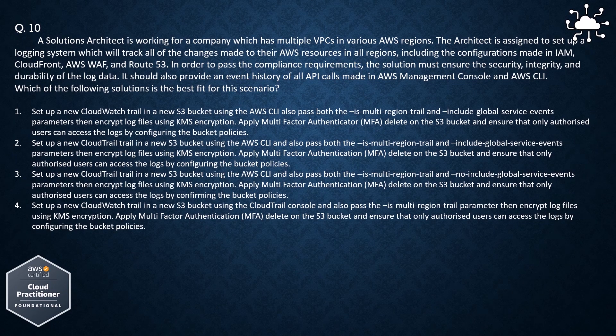Option 1: Set up a new CloudTrail Trail in a new S3 bucket using the AWS CLI and also pass both the isMultiRegionTrail and include global service events parameters, then encrypt log files using KMS encryption.